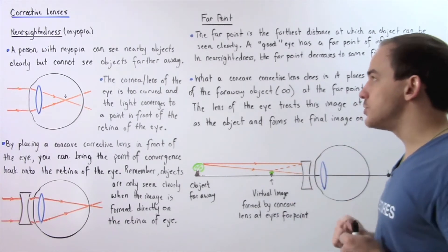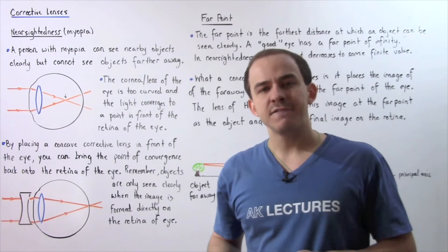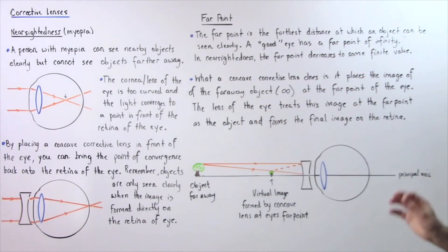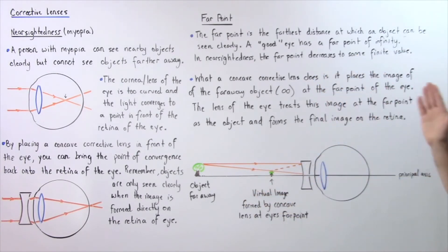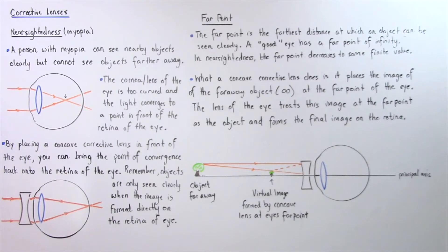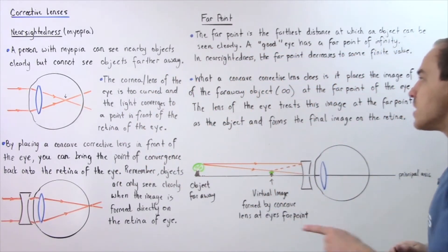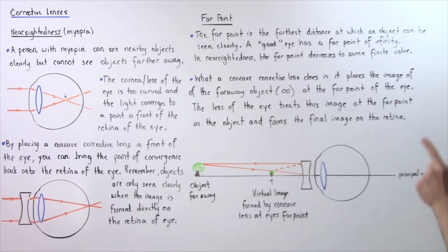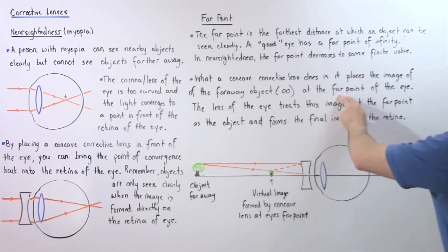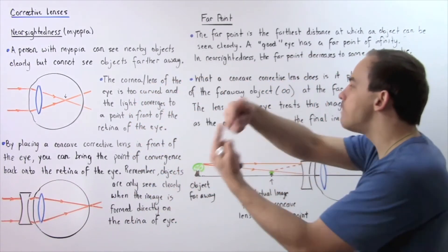Let's discuss the relationship between corrective lenses and the far point of an eye with myopia. The far point of the eye is the farthest distance at which an object can be seen clearly. A normal eye has a far point at infinity; however, in an eye with nearsightedness, the far point decreases to some finite value. A concave corrective lens places the image of a far-away object — normally at infinity — at the far point of the eye.